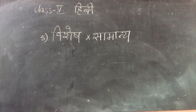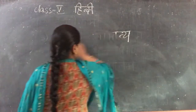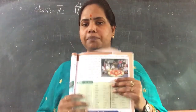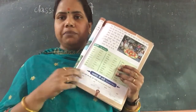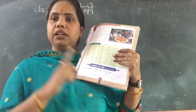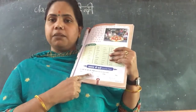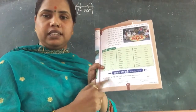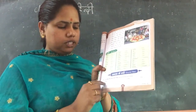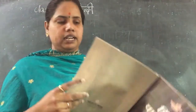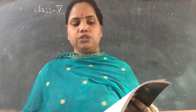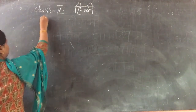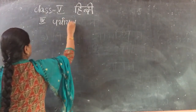Now we will be writing the Paryayvachi Shabd, which is given in the textbook page number 43. Paryayvachi Shabd means words that have the same meaning — both words having the same meaning. We also call it Shabdath. Like Tiohar, the textbook gives Parv — we will write two answers. One word will have two answers. While practicing in the textbook write whatever is given, but in classwork and homework write whatever I am teaching.